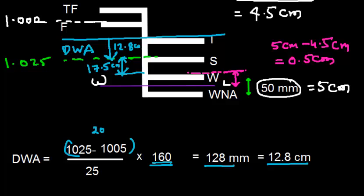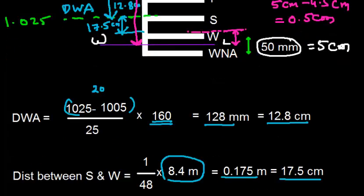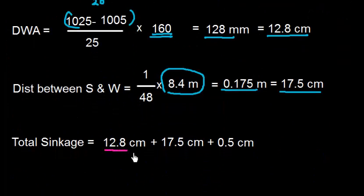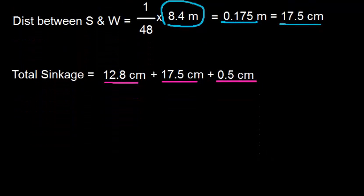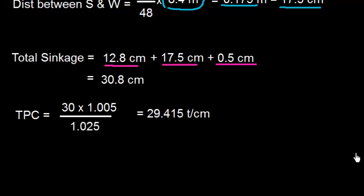We now calculate the total distance — or total sinkage — from the current waterline to the summer salt water load line. Total sinkage = dock water allowance (12.8cm) + S-to-W distance (17.5cm) + remaining 0.5cm = 30.8cm.